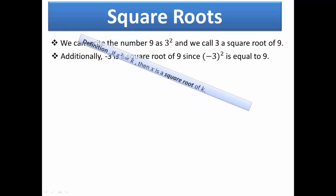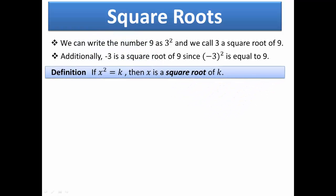We will now look at the definition. If x squared equals k, then x is a square root of k. All this says is if you have a number x and you square it and it equals another number, then the x is a square root of that number k.